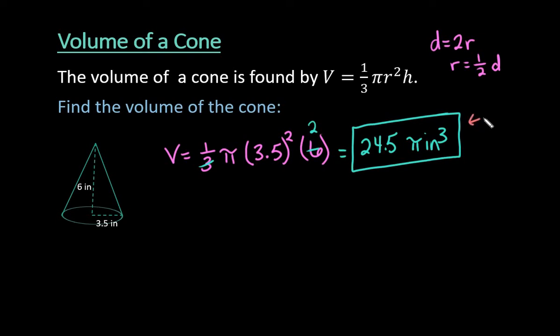This is what is known as the exact answer. So if they ask for an exact answer, you leave it in terms of pi. Since pi is irrational, you can't get an exact measurement that is not in terms of pi.